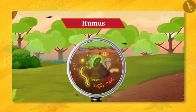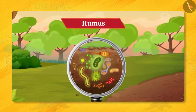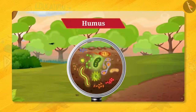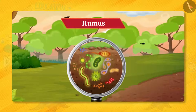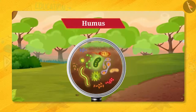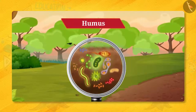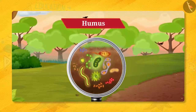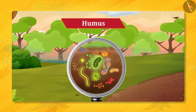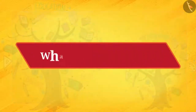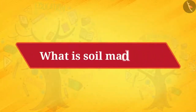In addition to small particles, soil consists of microorganisms and humus. Humus is nothing but the decay of living organisms, which makes the soil porous. The organisms living in soil cannot be seen with the unaided eye but can be seen with the help of a microscope. So, what is soil made of?